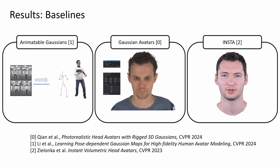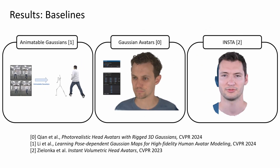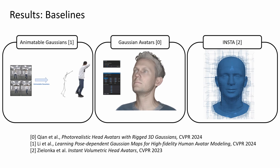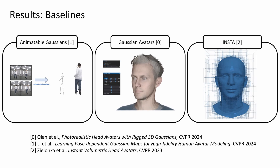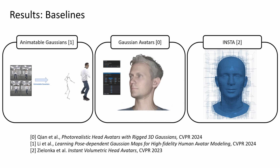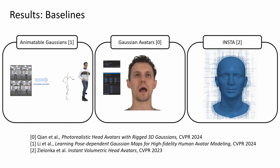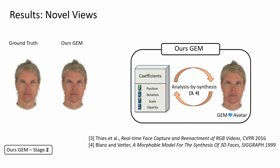We conducted a comparative analysis of our method against three state-of-the-art solutions: Animatable Gaussians, which utilize Gaussian maps with a convolution architecture; Gaussian Avatars, which optimize 3D Gaussians globally without employing any neural network; and Insta, which relies on dynamic NeRF and local conditioning.